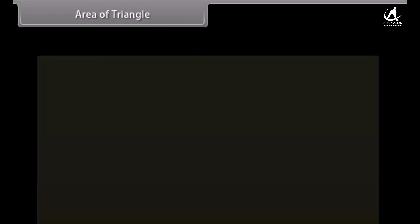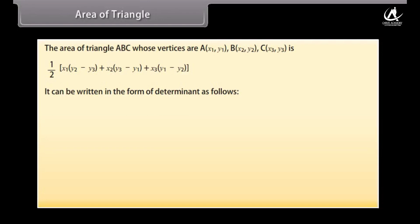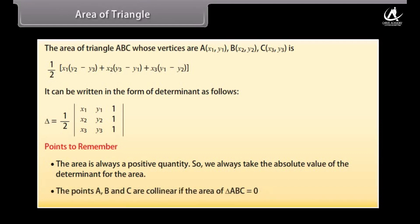Area of a triangle. The area of triangle ABC, whose vertices are A(x1, y1), B(x2, y2), C(x3, y3), is (1/2)|x1(y2 - y3) + x2(y3 - y1) + x3(y1 - y2)|. This can be written in the form of a determinant. Note: The area is always positive, so we take the absolute value. Points A, B, C are collinear if the area of triangle ABC equals 0.